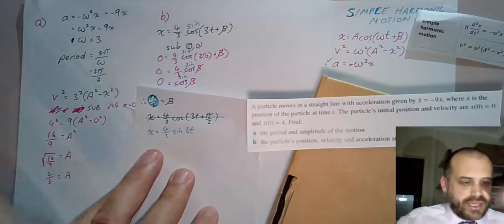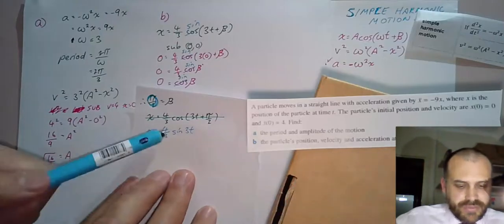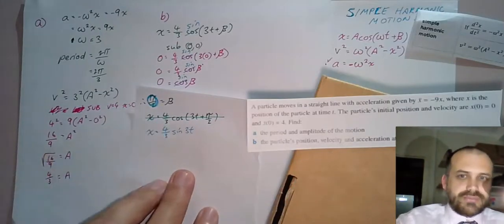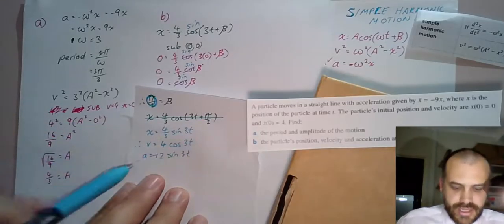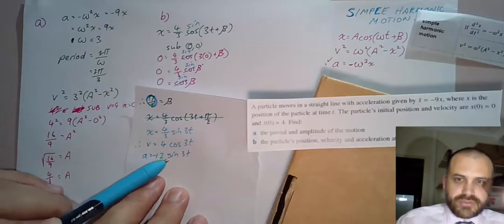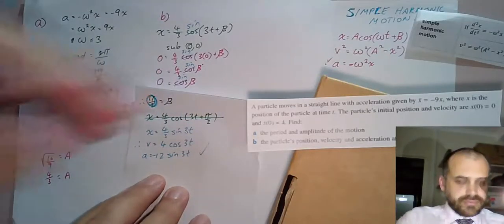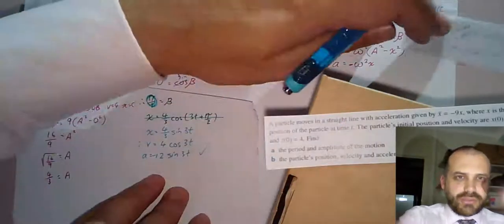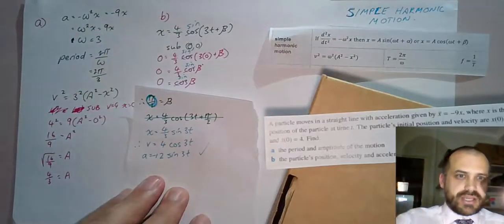What can we do from here? From here it's really straightforward. We can find velocity and acceleration by finding derivatives. x equals 4/3 sin(3t), v equals 4 cos(3t), and a equals -12 sin(3t). That is done. There is just a tiny bit more we might want to talk about with simple harmonic motion, but that is certainly enough to get us started.